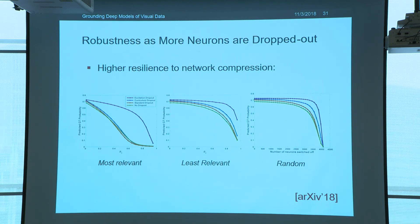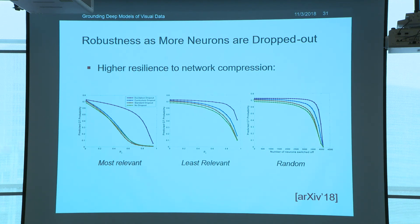What's also interesting about learning these alternative paths is that there's a lot of redundancy in the network, so we are using more and more of the network's capacity. We can actually compress the network quite a lot before we lose performance. On the x-axis we're dropping more and more neurons in the compression phase. The three colored curves are curriculum dropout — which is state-of-the-art — standard dropout, and no dropout. When you learn these alternative paths, you have the purple curve and you're a lot more resilient to compression.